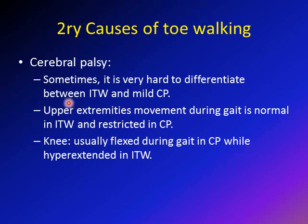First is assessment of the upper extremity. In idiopathic toe walking, it will be normal. However, it will be restricted during gait in cerebral palsy. Also, assessment of the knee: the knee will be in increased degrees of flexion in children with cerebral palsy. However, it's usually hyperextended in idiopathic toe walking. Again, sometimes it's extremely difficult to differentiate between idiopathic toe walking and mild cerebral palsy, and sometimes gait studies are needed for this reason.